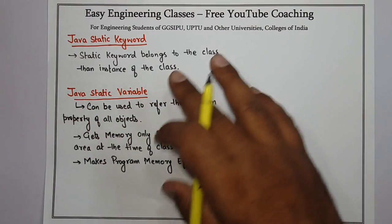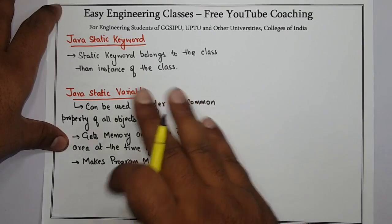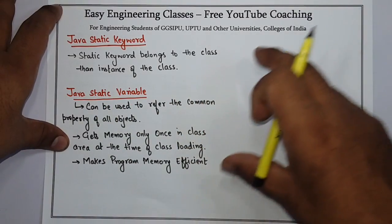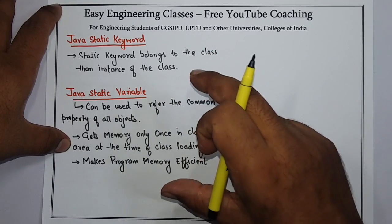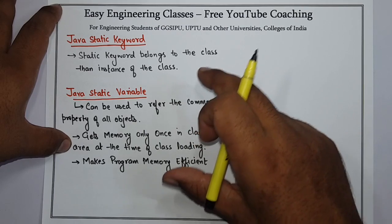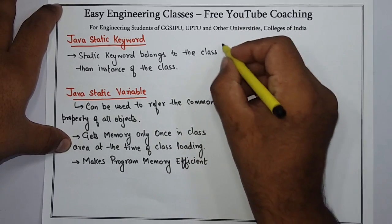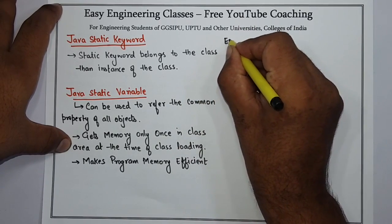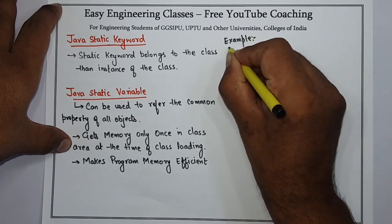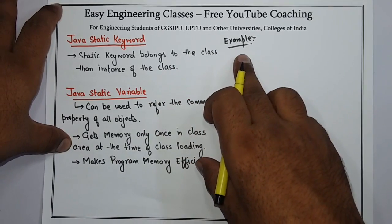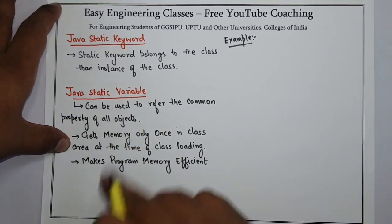If we declare a variable as static, then the value of that variable will remain constant throughout the class. It will not vary for different instances or different objects of the class. We will see a classic example — the problem of a counter without static, and then we will see how it is solved with the help of the static keyword.